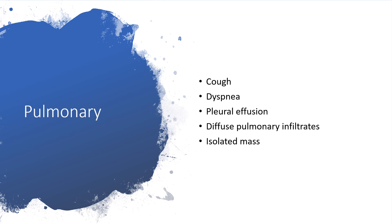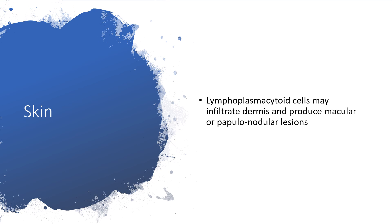When the pulmonary system is involved, we're dealing with cough, dyspnea, pleural effusion, and diffuse pulmonary infiltrates on chest X-ray or CT, and of course an isolated mass. The involvement of the skin will give us lymphoplasmacytoid cells that may infiltrate the dermis and produce macular or papulonodular lesions.